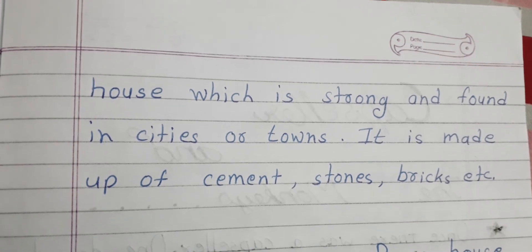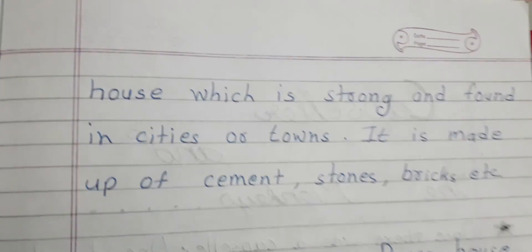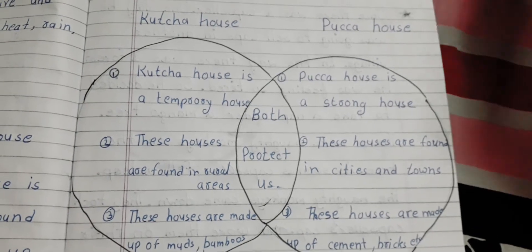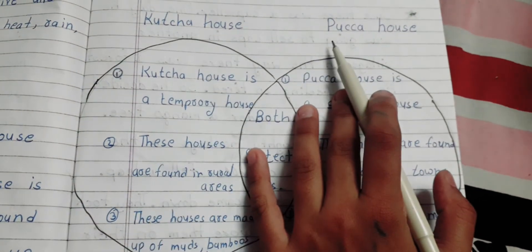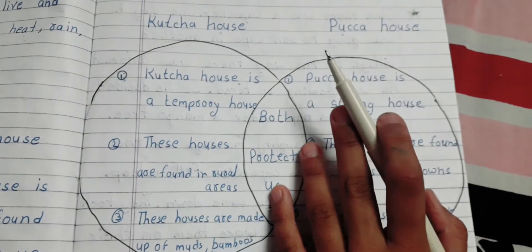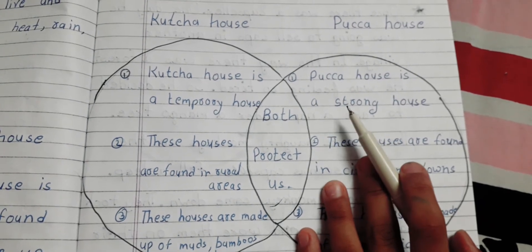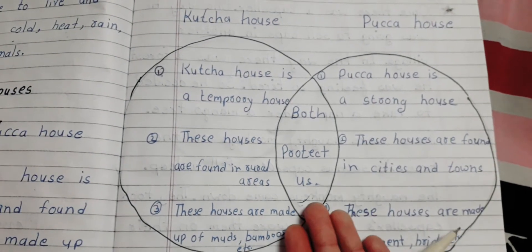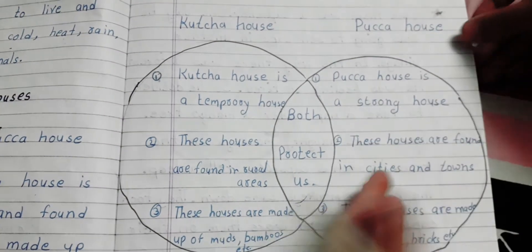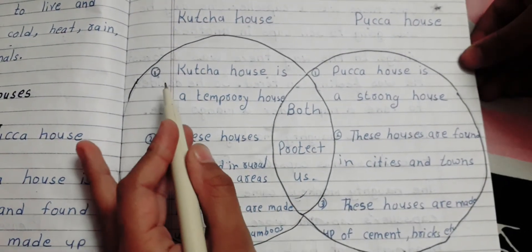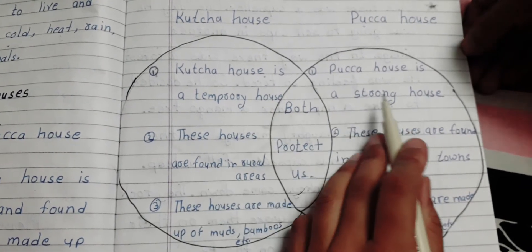Some examples of pakka houses are tilt houses, igloos, etc. Now I will tell you the common things between kacha house and pakka house using a graphical organizer called a Venn diagram. This diagram shows the differences between kacha house and pakka house.